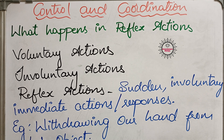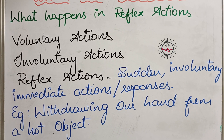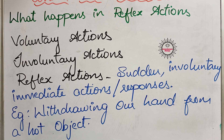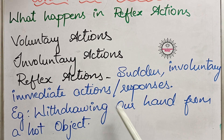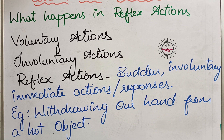What are reflex actions? First, let us discuss what types of actions take place in our body. Three types of actions take place: voluntary actions, involuntary actions, and reflex actions. Voluntary actions are those that take place with our knowledge, under our consciousness — like walking, running, reading, and writing. These are called voluntary actions.